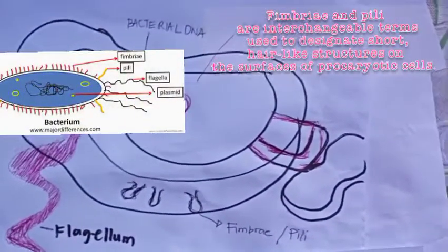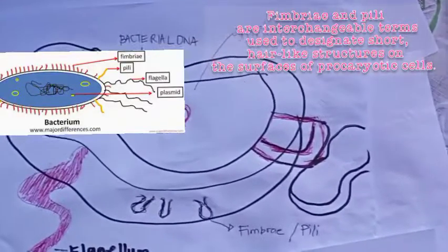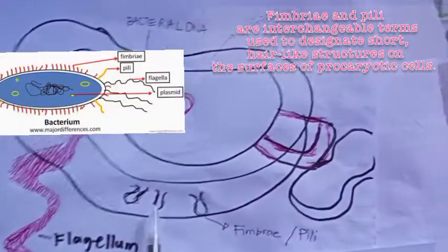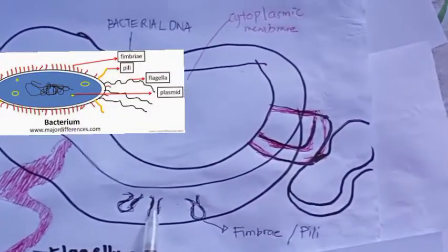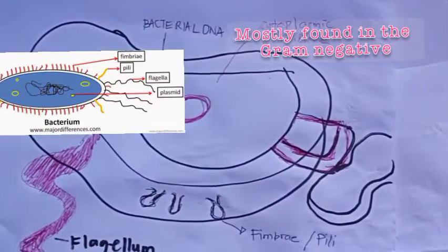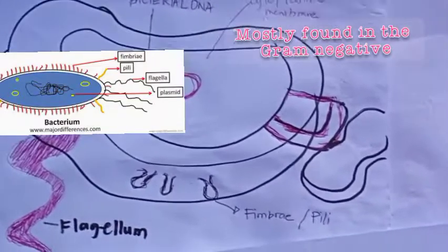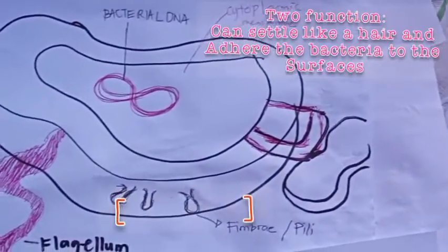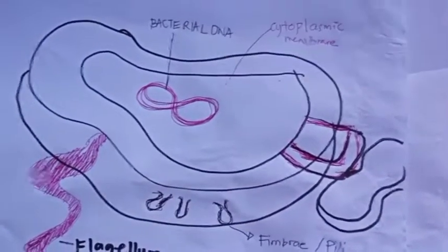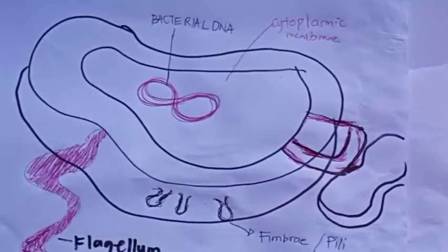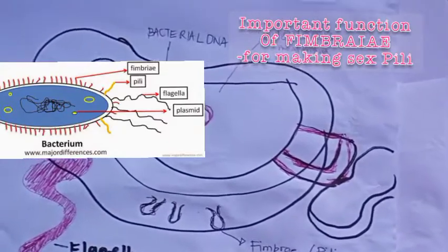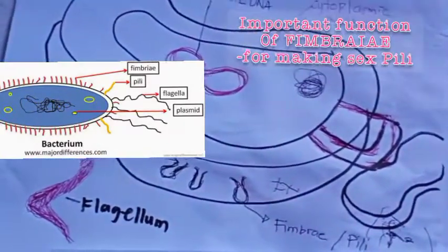Let's proceed to another structure: the fimbriae or pili. These are filamentous polymeric materials found mostly in gram-negative bacteria. Fimbriae can adhere the bacteria to surfaces like hair, and they take part in creating biofilms. The most important function of fimbriae is making the sex pili.